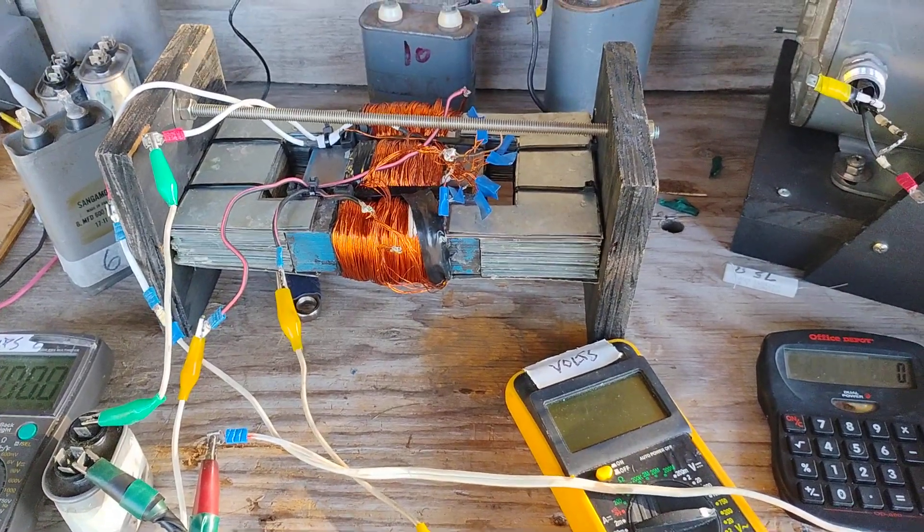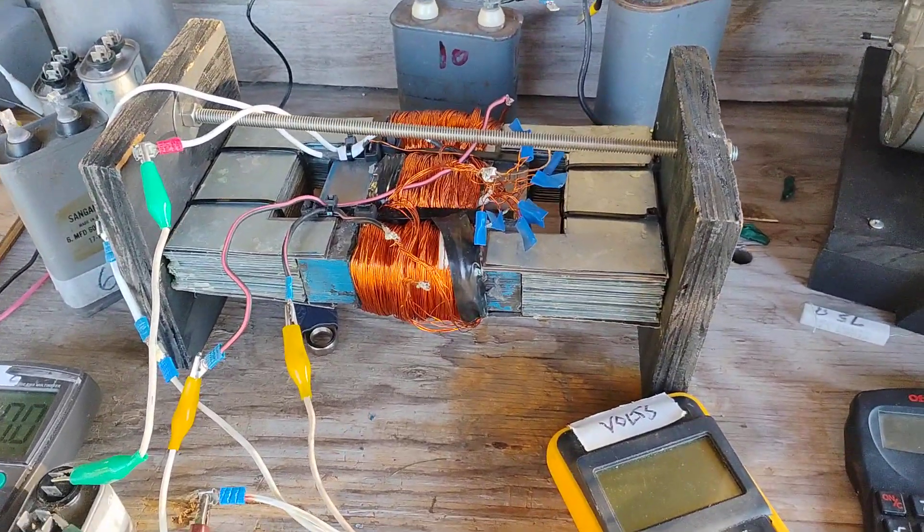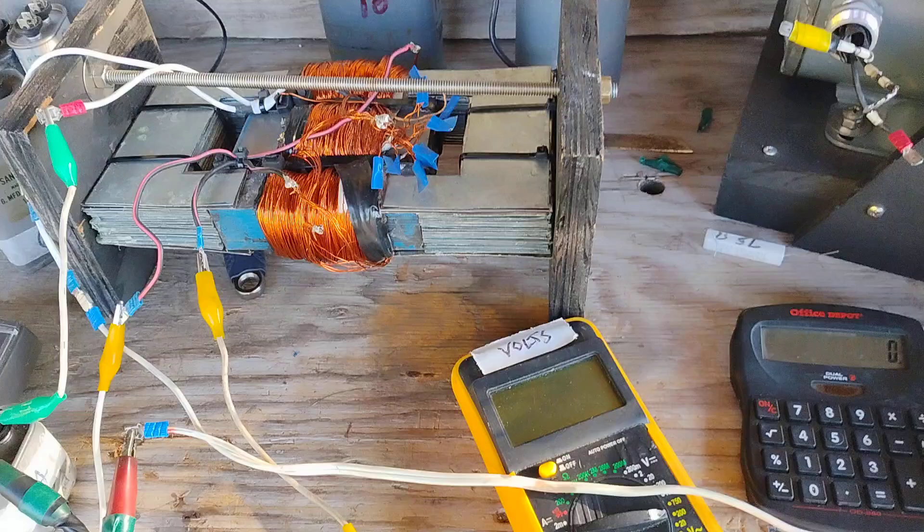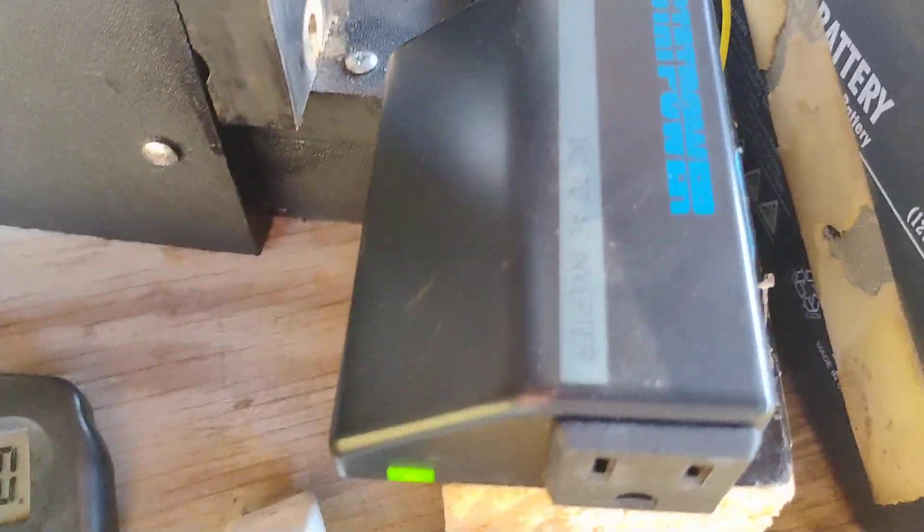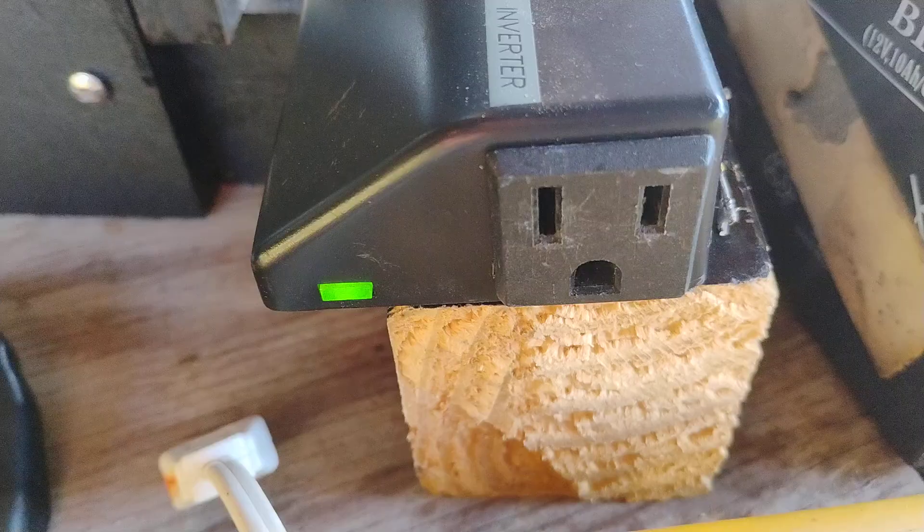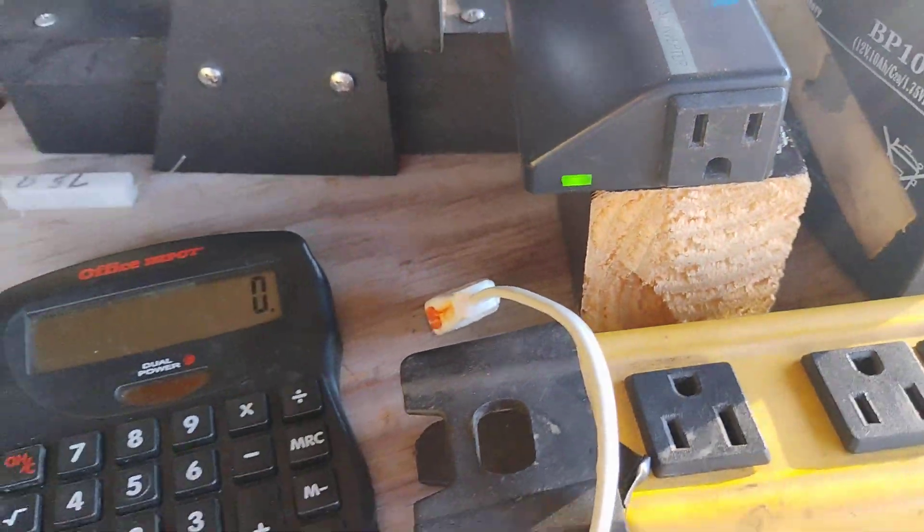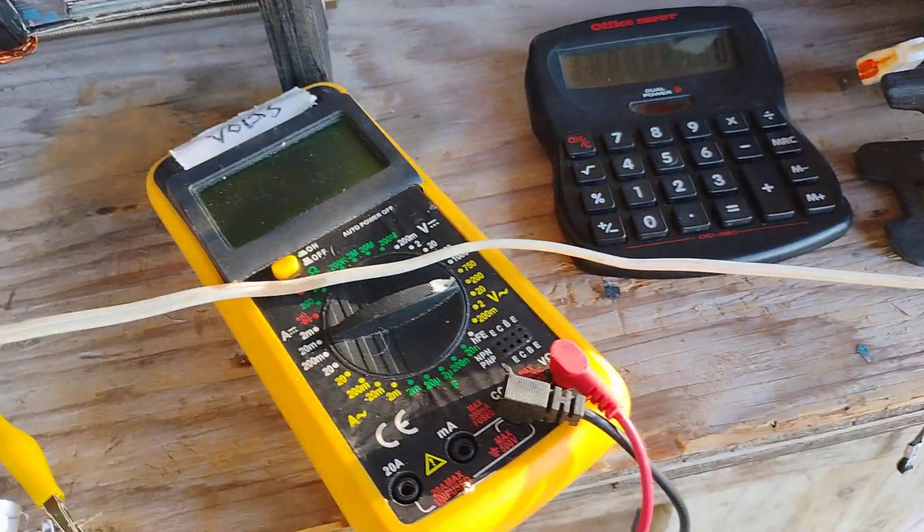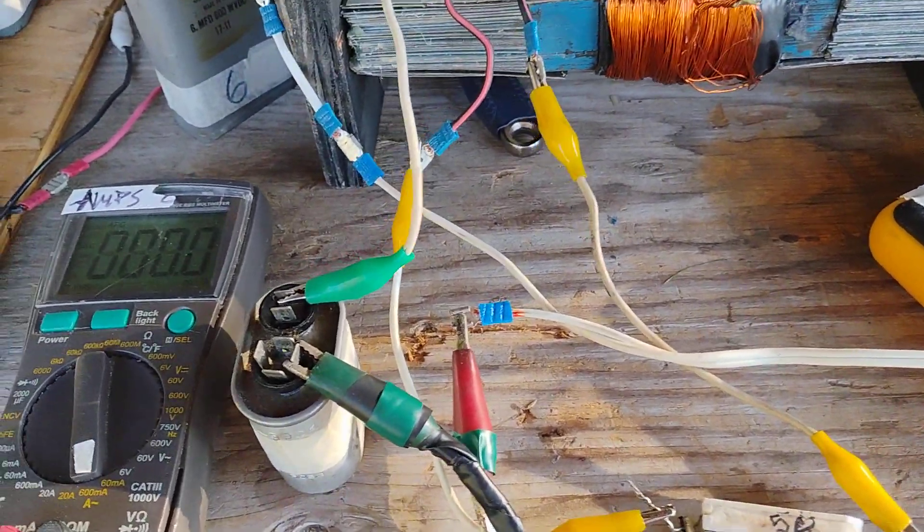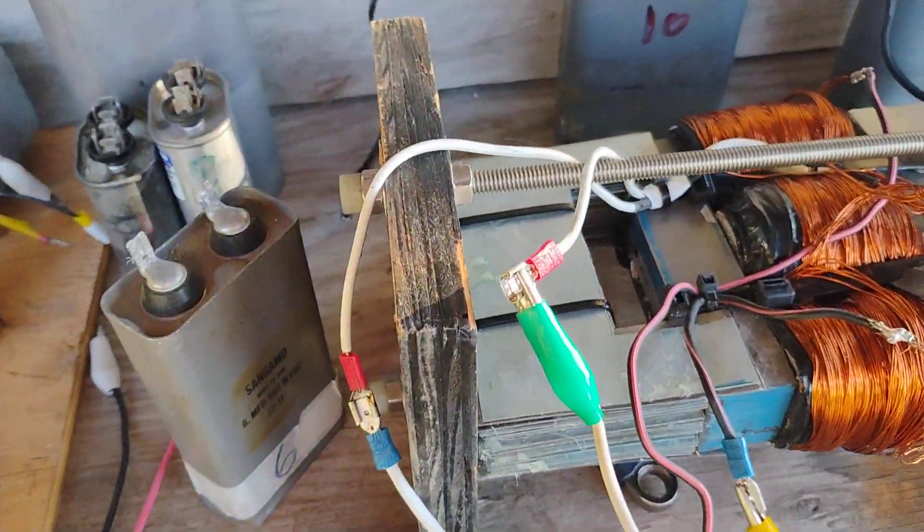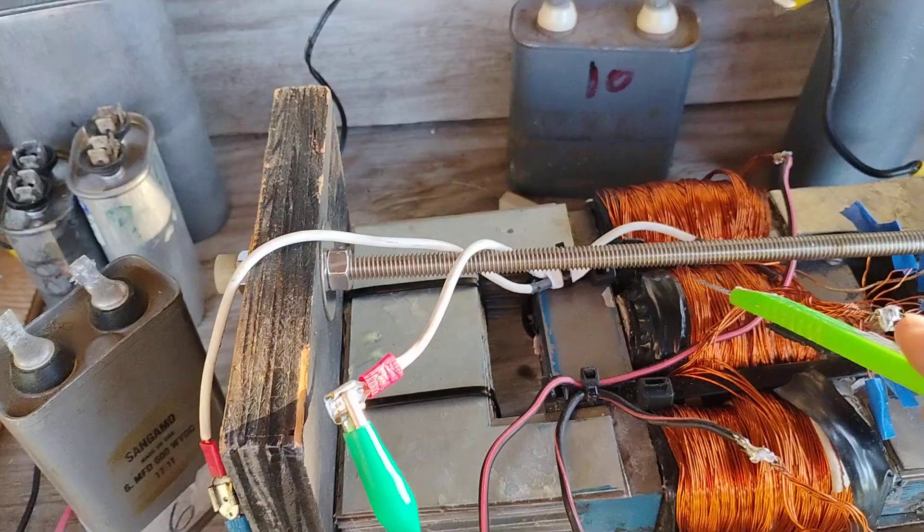Okay, here's another over unity test. This time I'm not using the grid, but I'm going to use this stat power inverter with its 120 volts output. And that is going to feed the primary here, the middle coil here.